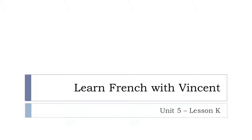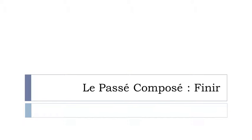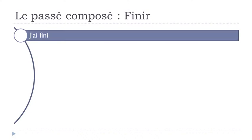Bonjour à tous, hi everyone and welcome to Learn French with Vincent. This is Unité 5, Leçon K. And in this lesson we'll finish the whole thing that we started with le passé composé. Okay, so we'll just see one more time the passé composé form of finir. Finir is 'to finish' or 'to end.' Okay, and let's see how it goes.